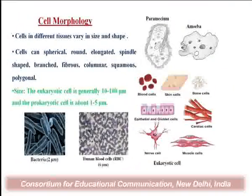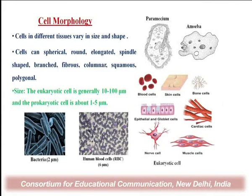Prokaryotic organisms are made up of only one cell, called the prokaryotic cell. Eukaryotic organisms are made up of more than one cell, which has the eukaryotic cell. In this slide, we can see many types of cells with various shapes and sizes.